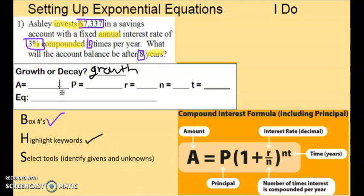A, we don't know what that is yet. P is our original amount, our principal amount. That is $7,337. Our rate is 3%. And as a decimal, that's 0.03. N, our number of times per year is 4. T is 8 years.